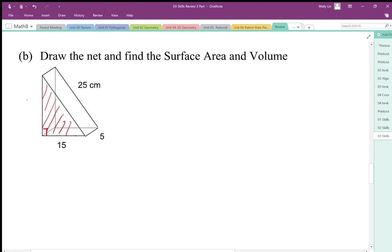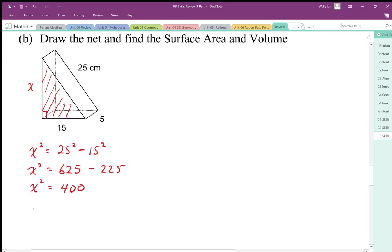So I still need to find this length here. I'll call x. So x squared is equal to the long side squared minus the shorter side squared. x squared equals the long side squared, so that works out to be 625 minus 225. x squared is 400. When I square root 400, I end up with a length of 20. So this is 20 centimeters.